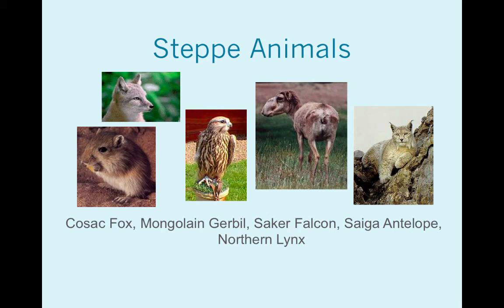Here are some steppe animals. Everybody's always attracted to the saiga antelope — that nasal cavity is used to filter out a lot of the dust. The Cossack fox is a very short-snouted fox you may not be used to seeing. As with all the biomes, whatever animal strikes your fancy, tuck that away as your example for this particular area.